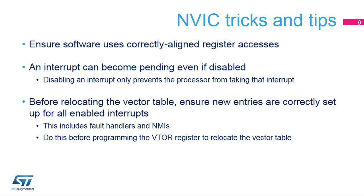When accessing the NVIC registers, ensure that your code uses a correctly aligned register access. Unaligned access is not supported for NVIC registers, as well as all memory-mapped registers located in the Cortex-M0+. An interrupt becomes pending when the source asks for service. Disabling the interrupt only prevents the processor from taking that interrupt. Make sure the related interrupt flag is cleared before enabling the interrupt vector.